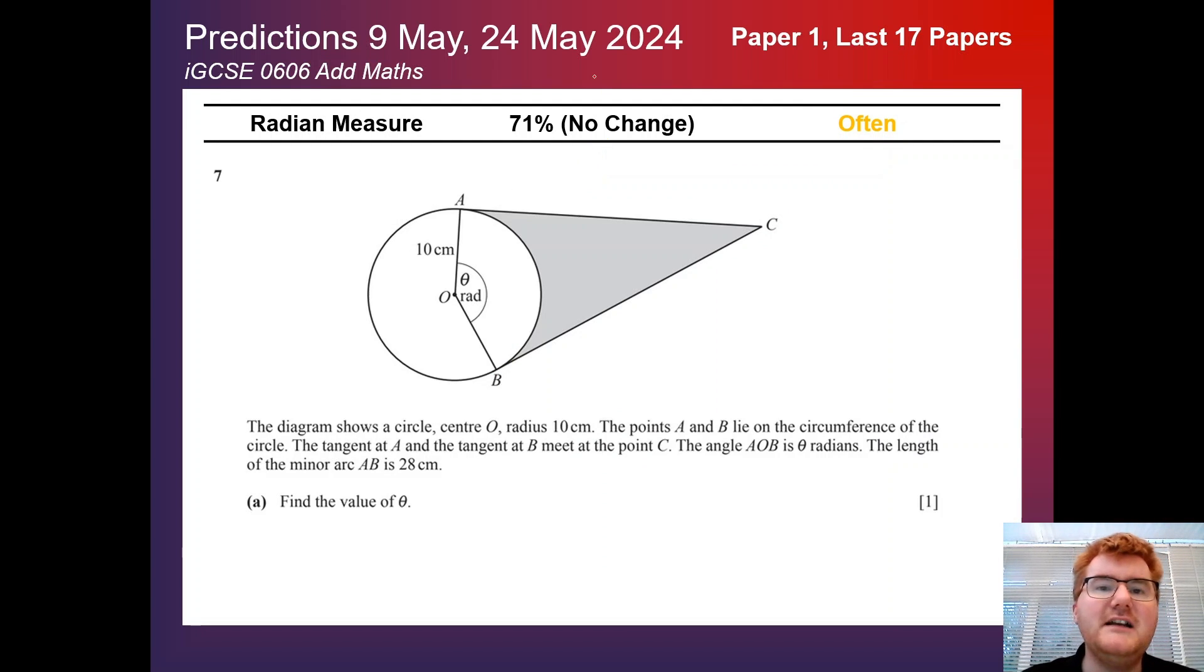Then we have radium measure. Again, so far, not many changes on Paper 1. We have 71%, no change, in my often category. You can see a very typical question here in front of you. You'll notice Paper 2 has changed quite a bit, so stay tuned for that part.